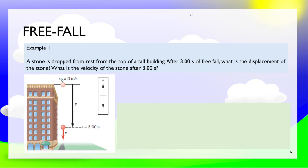Now let's go to freefall. A stone is dropped from rest from the top of a tall building. After 3 seconds of freefall, what is the displacement of the stone and what is the velocity of the stone after 3 seconds? Let's write the given first. The time is given, and for freefall, the acceleration we will use is gravity.